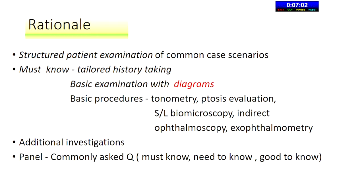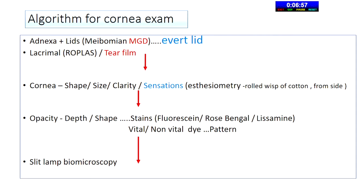The algorithm for the corneal exam: please don't forget the adnexa and lids — the movement and glands. My first tip is to always evert the lid during a corneal exam, otherwise you'll miss papillae and other findings. Also do the Rho plus test — very often candidates say 'we forgot that' which is not acceptable.